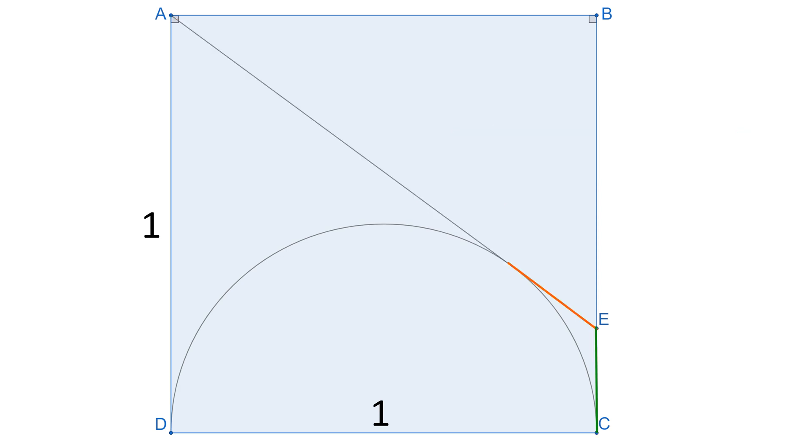Noting tangents that meet at the same point are equal in length, the green line and the orange line are congruent. We label these segments as y.